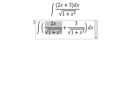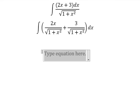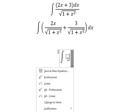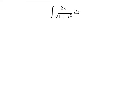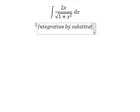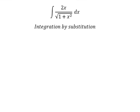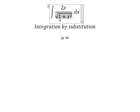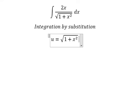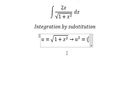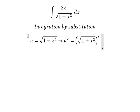Now I will concentrate on this one first. So we need to use integration by substitution. I will put u equals to the square root of one plus s squared, then we square both sides to cancel the square root.